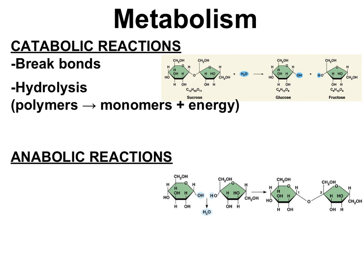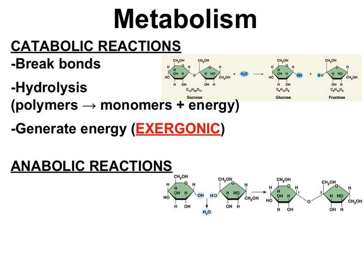Catabolic reactions are reactions that break chemical bonds. In our biochemistry unit, we called this process hydrolysis, where molecules of water are used to split polymers into monomers. In this example, the glycosidic bond of sucrose is being broken down in a hydrolysis reaction to give two monosaccharides — glucose and fructose. Catabolic reactions release energy when chemical bonds are broken. Energy stored in the bonds is released and can be used to do cellular work. The name for a reaction that releases energy is an exergonic reaction.